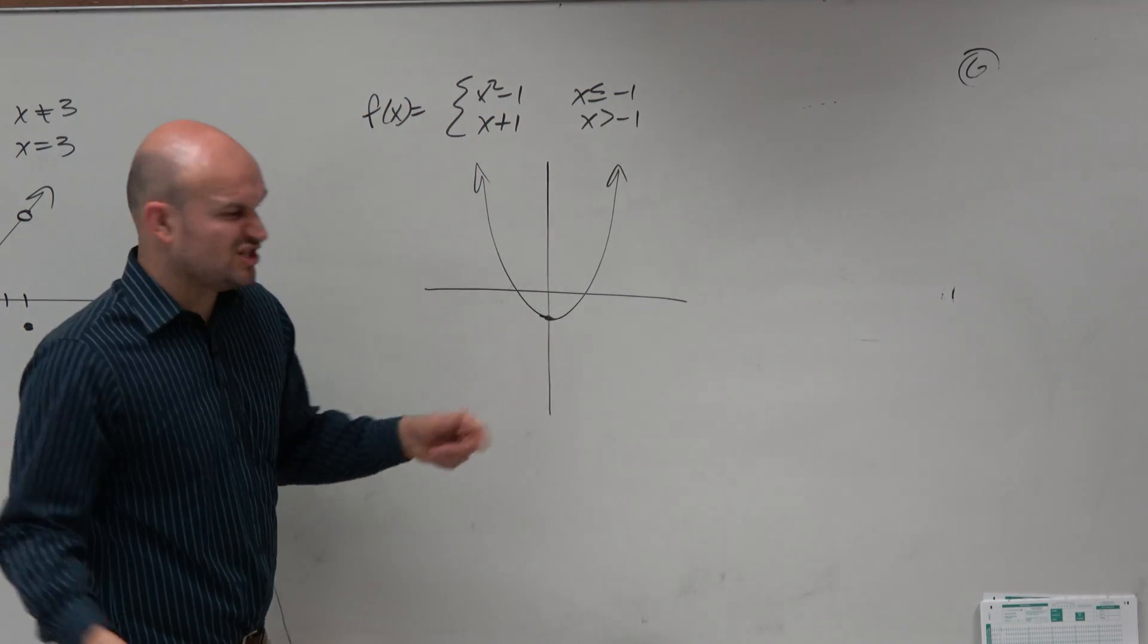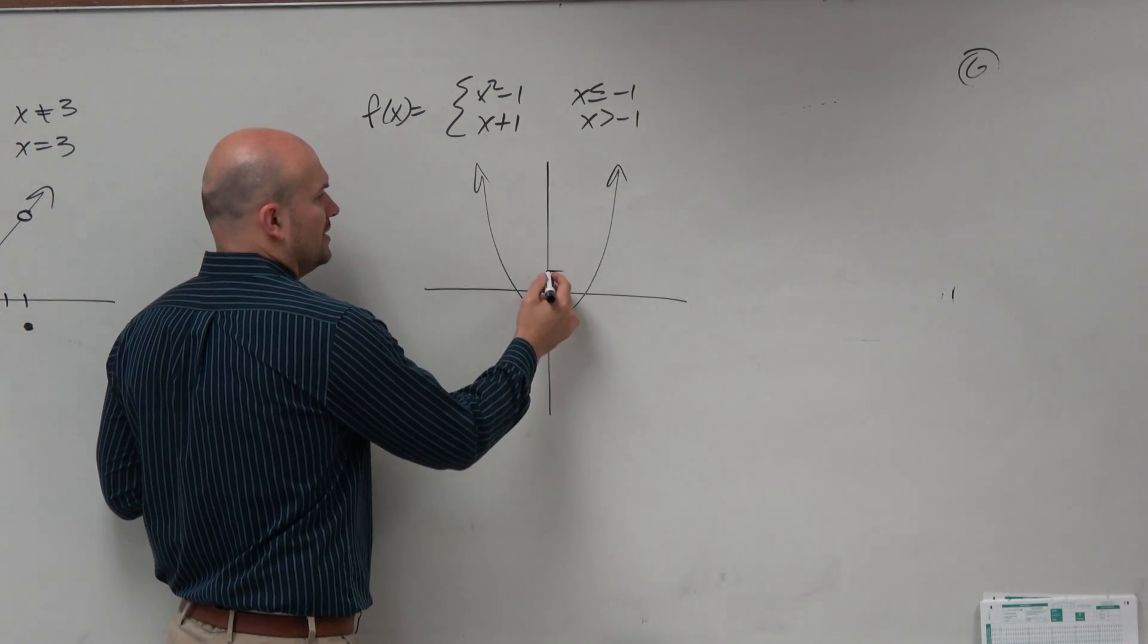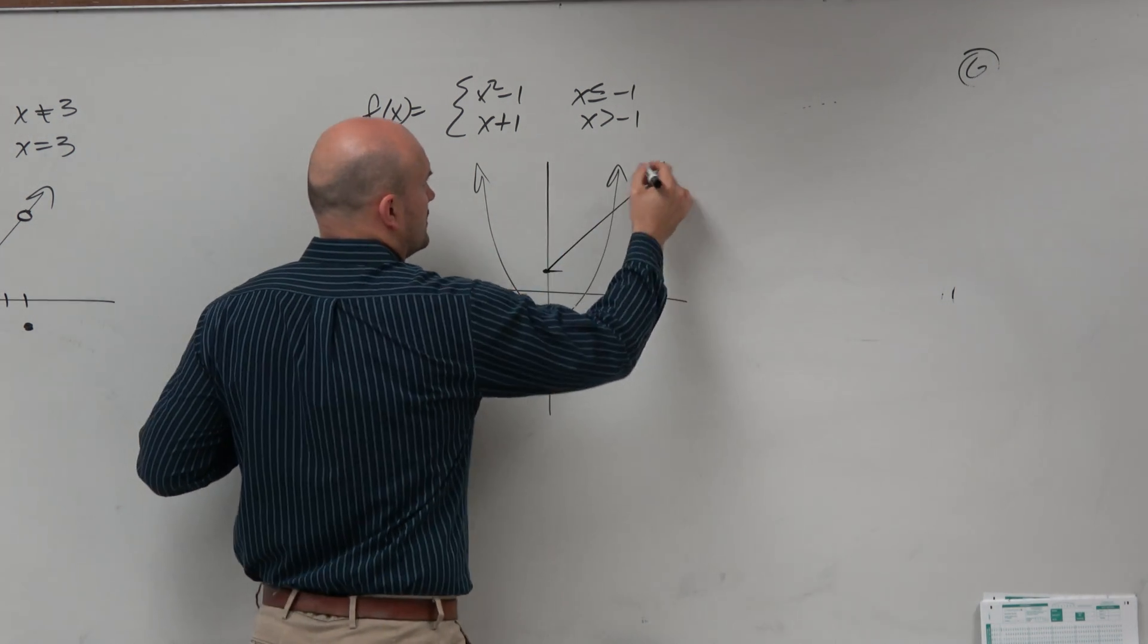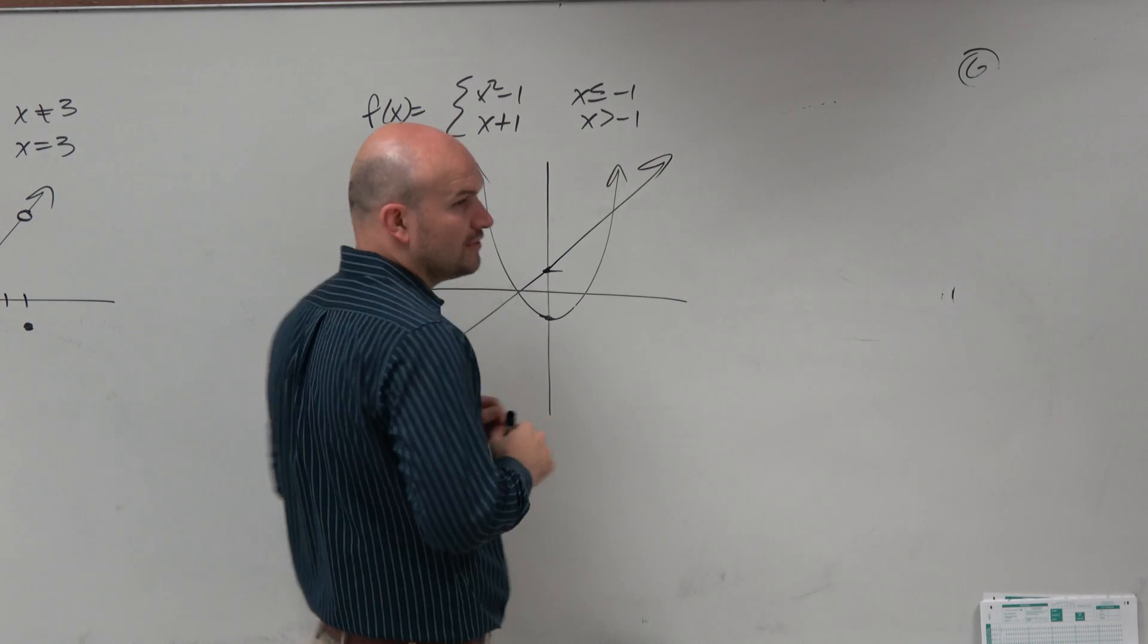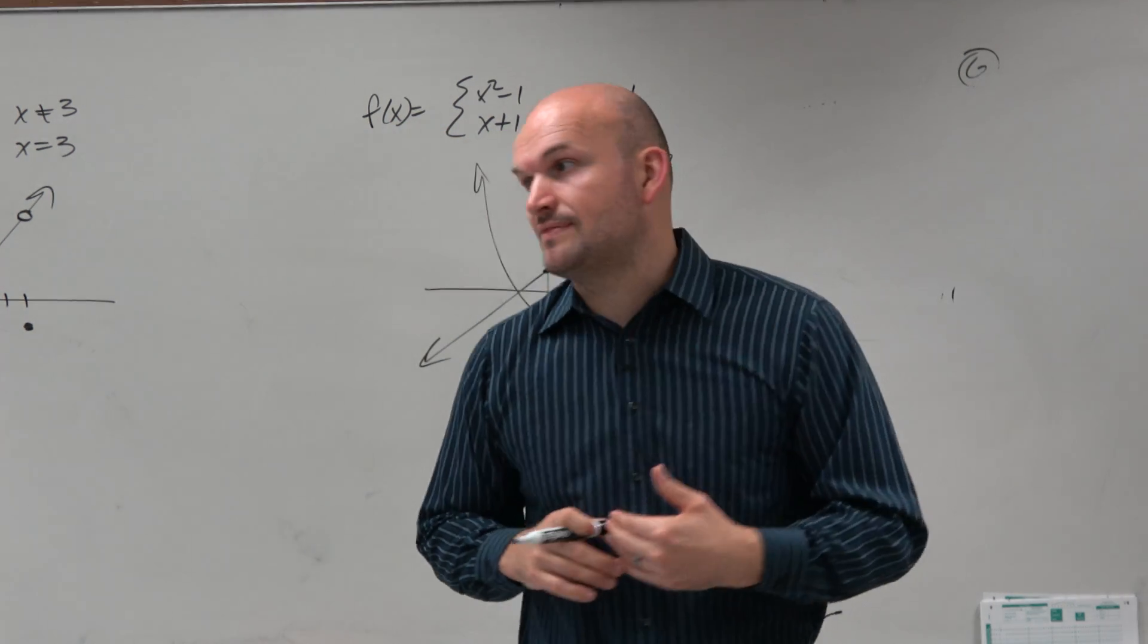And then we have x plus 1, which is just a standard line. So we're going up 1, and then it's an up 1 over 1. So that's a rough sketch of the graphs. Now, let's go ahead and look at the restrictions.